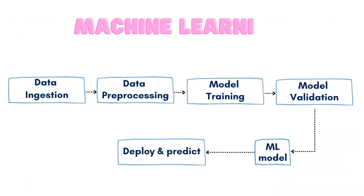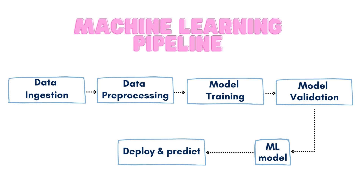Here is our machine learning pipeline. The first step consists of importing the data from different sources — for example, it can be a CSV file or big data. Then we will process this data; we may check if there are any null or duplicate values and scale some columns if needed.